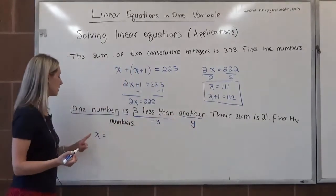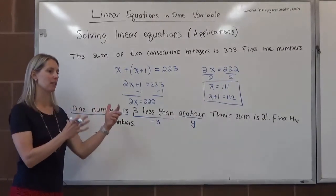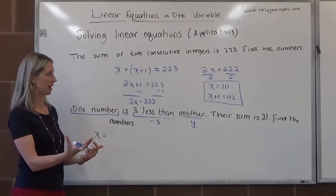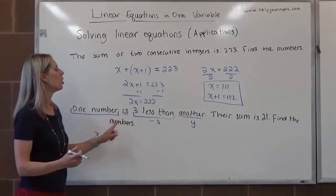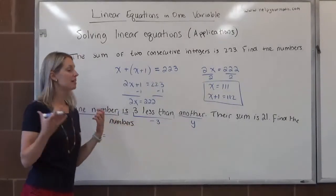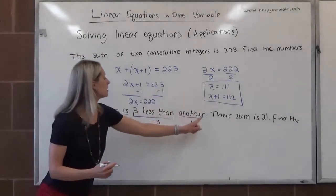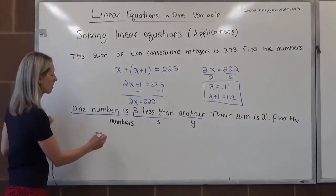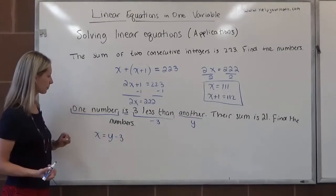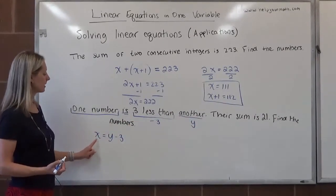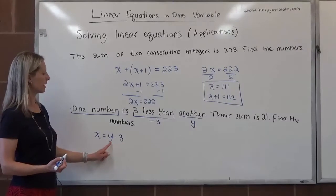You cannot use the same variable here because that would indicate that it's the same number and I don't think it's going to be the same number. So you do need to switch the variable here to something besides whatever you chose for your first variable. Writing this as one thing, 3 less than another, that would be y minus 3. So this is the first sentence, one number is 3 less than another.